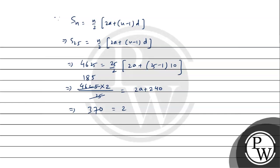This equals 2a + 240, so 2a = 370 - 240 = 130. Therefore, a = 130 ÷ 2 = 65.